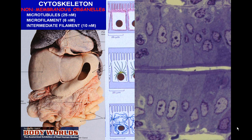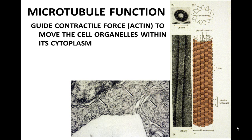Looking at the components within the cell, we see microtubules directing out from a centrosome throughout the height of the cell, microfilaments underneath and projecting out the surface to form the brush border, and intermediate filaments attached to desmosomes and hemidesmosomes. The conference today will focus on microtubules and microfilaments. Microtubules provide a guide for contractile force to move organelles along, while actin is the actual contractile force.